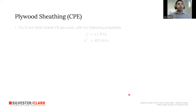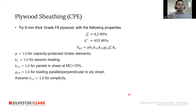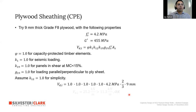For the plywood sheathing CPE, a 9 mm F8 grade ply is tried with in-plane shear strength of 4.2 MPa and shear modulus of 455 MPa. Under overstrength conditions, phi = 1, load duration factor = 1, moisture factor = 1, load direction factor = 1, and stability factor K12 = 1. Plugging into the NZS 1720 design equation gives a plywood sheathing capacity of 25.2 kN/m, which exceeds the overstrength shear flow of 11.3 kN/m.